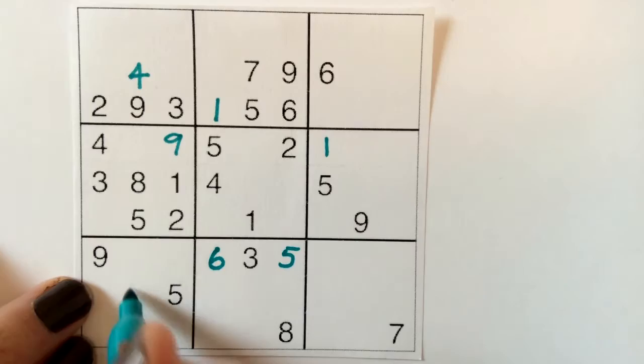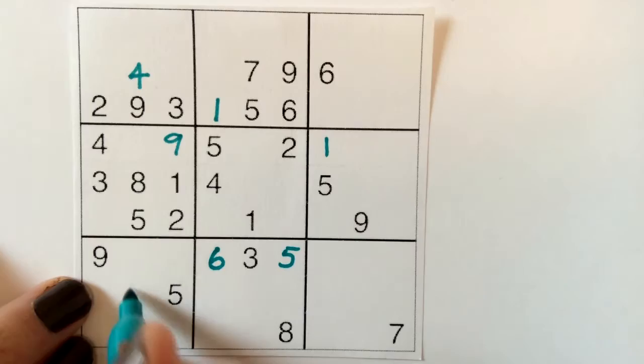It turns out the simplest algorithm by far is to just try out all the combinations until you find the answer, but this isn't very sensible. There are just too many combinations.